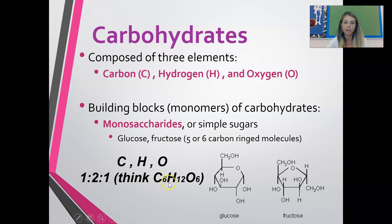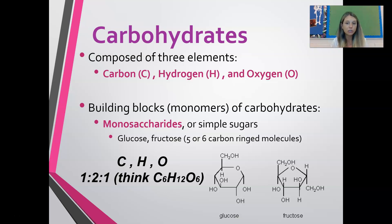Carbohydrates, or sugars, are made up of building blocks known as monosaccharides. Saccharide means sugar, so a monosaccharide is a single sugar, or what we call a simple sugar. Glucose, for example, is a monosaccharide. Fructose is another example — a five-ringed sugar — so that's another example of a monosaccharide.